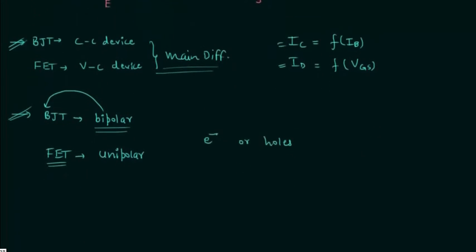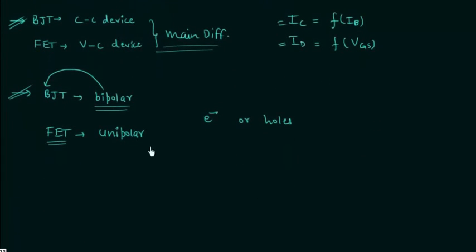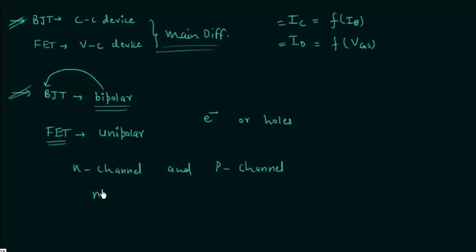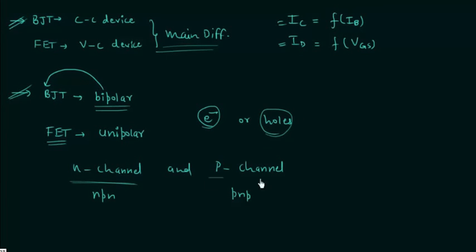Only one type of charge carrier is used for current conduction in FET, which is why it is called a unipolar junction transistor. In a FET, we have two types: N-channel and P-channel FET. If the current conduction is due to electrons, it comes under the classification of N-channel FET. But if the current conduction is due to holes, it comes under the classification of P-channel FET.